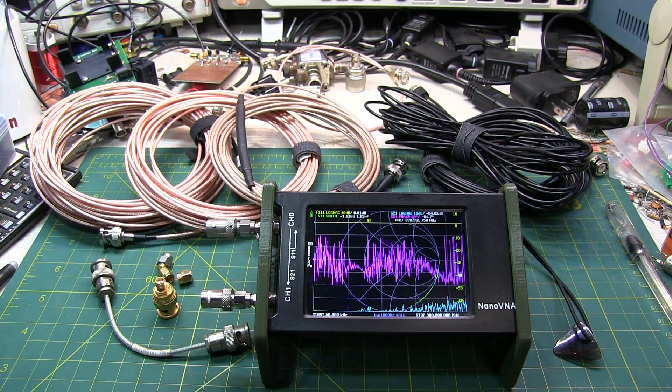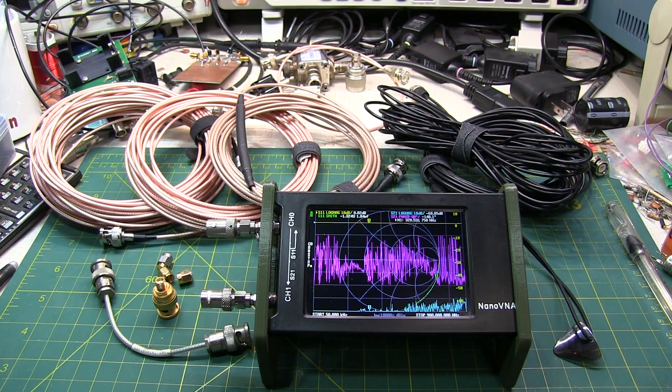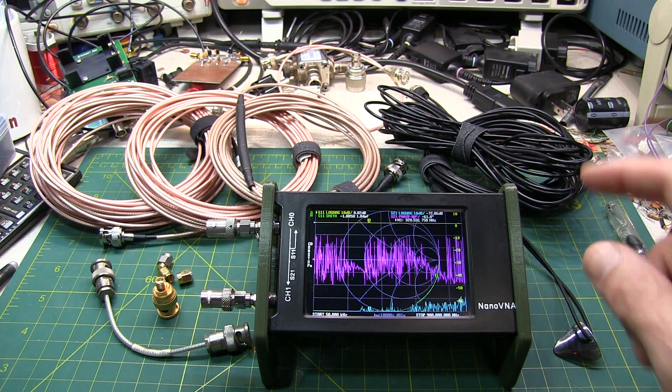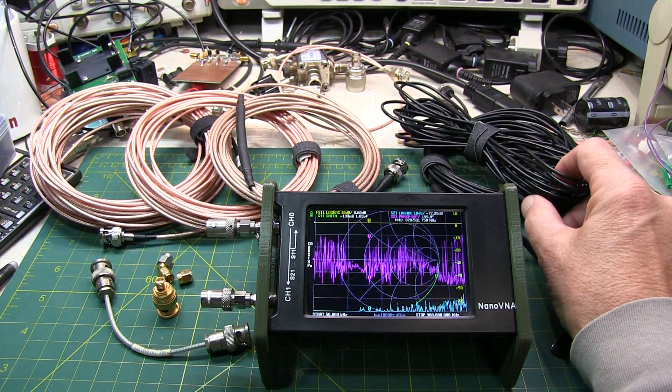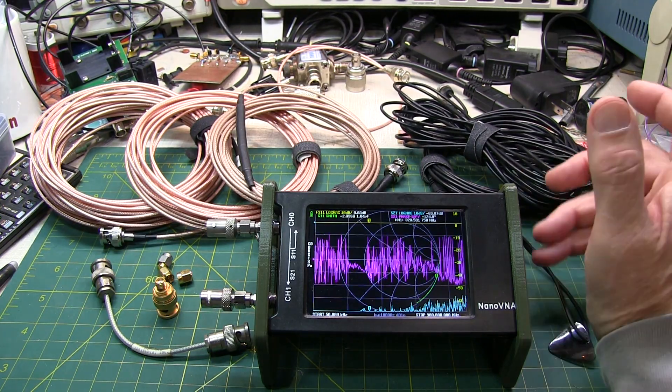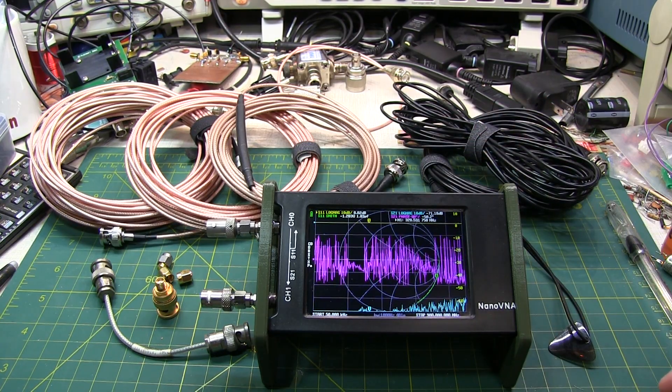In today's video, we're going to take a look at how to measure the loss of coax using a NanoVNA. More specifically, I'm going to look at the hunks of coax that I use when I operate portable HF amateur radio operation, typically below 30 MHz, so I expect that the loss of each of these cables is going to be quite low.